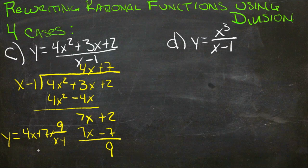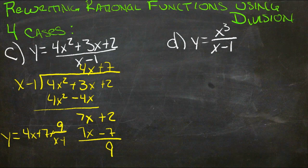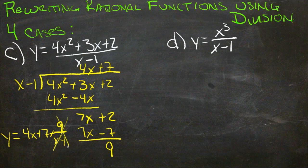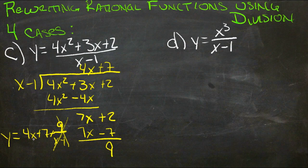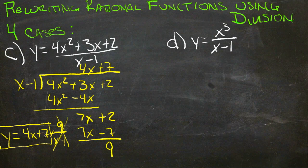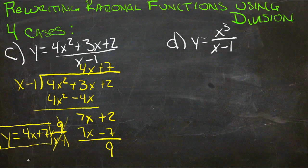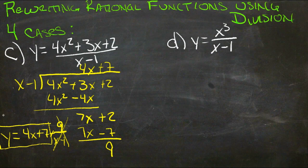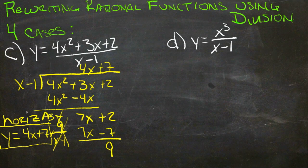Now, as x gets bigger and bigger, what happens? Well, 9 over a bigger and bigger number eventually just disappears, because it gets to be so small it might as well be 0. The 7 stays, and the 4x just keeps getting bigger and bigger. So really what we end up with here is an asymptote that's y equals 4x plus 7, which is a diagonal line, this is a linear equation. So this is an oblique asymptote, or a slanted asymptote.